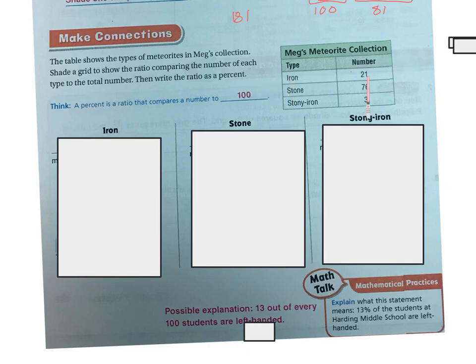So if we're looking over here, we have iron, which is 21, stone, which is 76, stony iron, which is 3.